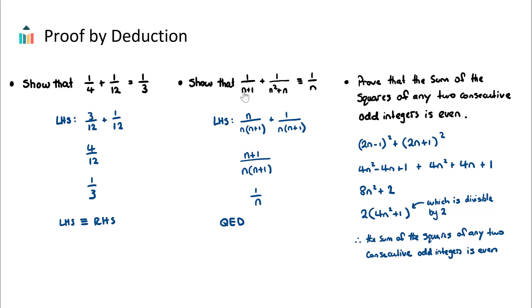The second example is quite similar. We want to show that 1 over (n+1) plus 1 over (n² + n) is equivalent — using the identity symbol — to 1 over n. Looking at the left-hand side, we multiply the first fraction top and bottom by n to get n over n(n+1). For the second fraction, we factor the denominator as n(n+1), giving us a common denominator. Therefore we have (n+1) over n(n+1), the (n+1)s cancel, and we are left with 1 over n, which was the right-hand side. We conclude with the left-hand side equivalent to the right-hand side, or QED.